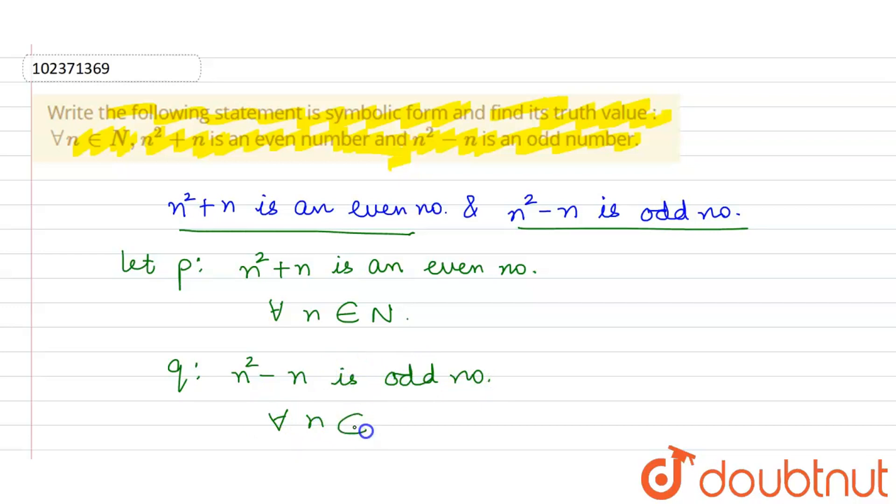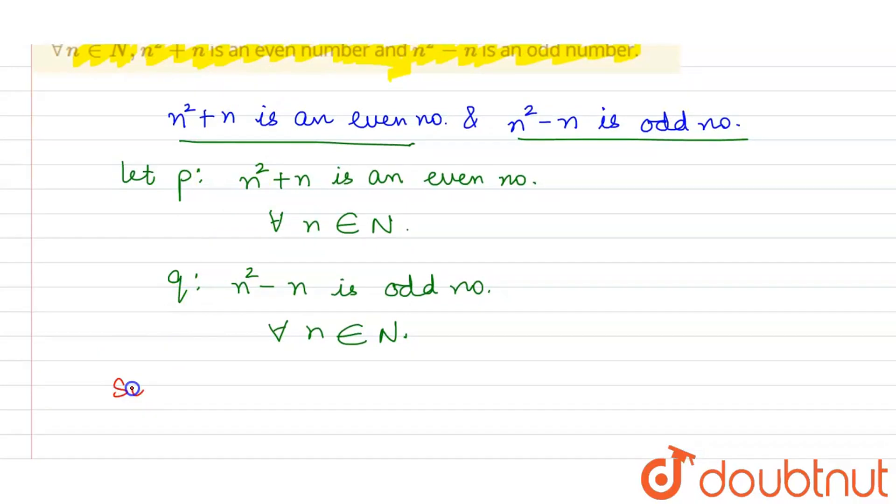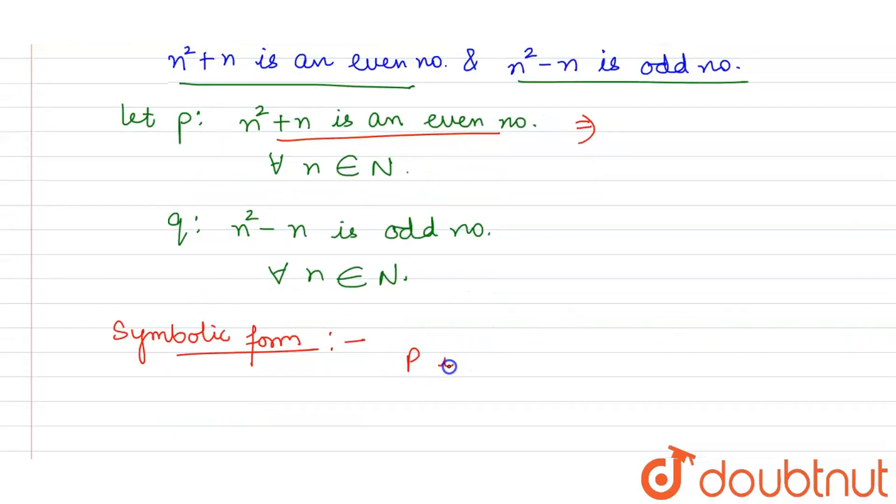Ab iski symbolic form kya ho jayegi? Symbolic form aur truth value batani hai. To, symbolic form ke liye aap dekhen, truth value kya hogi iski? n² + n jo hai, wo kya hota hai? Wo aapke paas even number hota hai. So, P is true. Aur Q is odd number. n² - n jo hai, wo odd nahi hota hai, wo bhi even aayega.